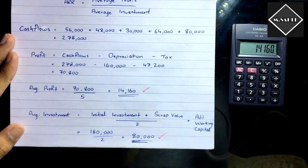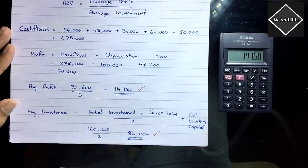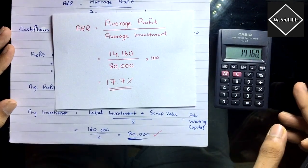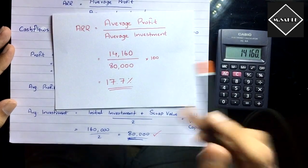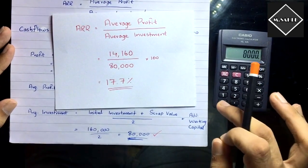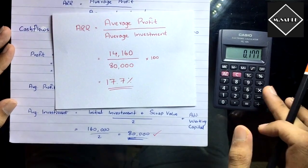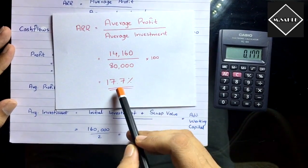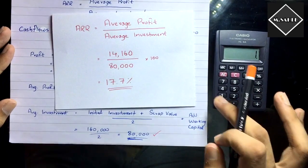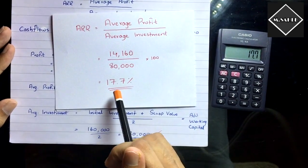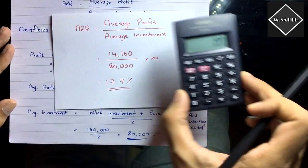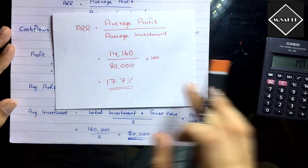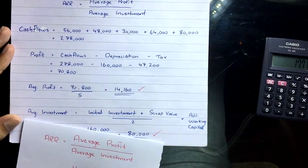Now that we have average profit and average investment, we can find ARR: ARR = 14,160 / 80,000 × 100 = 17.7%. So the Average Rate of Return for this project is 17.7%.